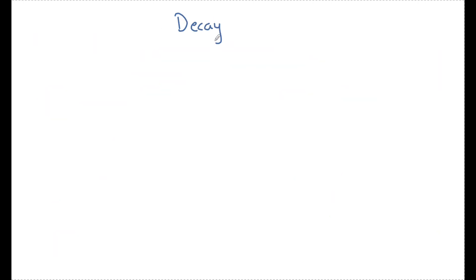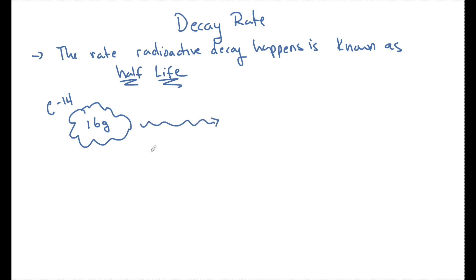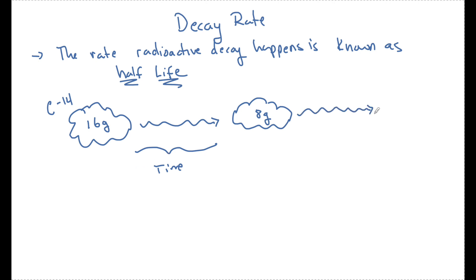Now let's talk about the decay rate — how fast does alpha or beta decay happen naturally? The rate at which radioactive decay happens is known as the half-life. All half-life says is that we have a certain amount of an element — let's say we have 16 grams of carbon-14. The half-life is the time interval for this to break down to 8 grams. Then the same exact half-life happens again and breaks this down into 4 grams. Every radioactive element that naturally decays has its own specific half-life.